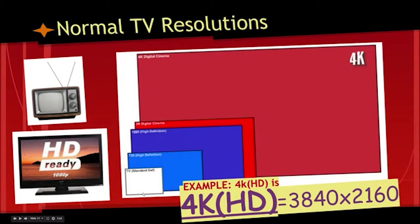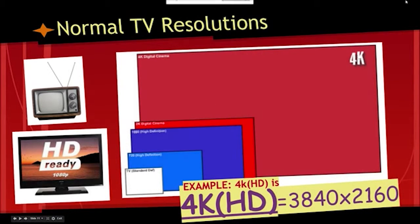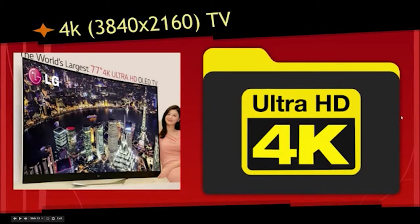Normal TV back when I was a kid was standard definition — about 600 by 400 pixels. We just talked about 720p and 1080p. The new television quality that is coming out, including in movies, is 4K. 4K televisions just started coming out in the last two or three years, but they're often over $500, $1,000, even $10,000. A 4K image is almost 4,000 pixels left to right and over 2,000 up and down.